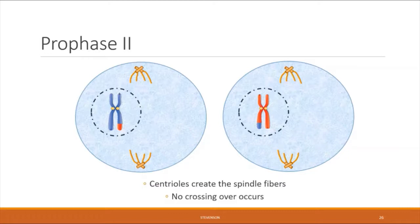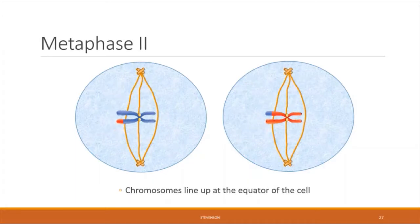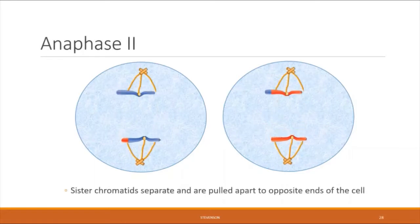Notably, no crossing over occurs in prophase two, because the homologous chromosomes have already been separated into two separate cells. During metaphase two, the chromosomes line up attached to the spindle fibers along the equator of the cell. In anaphase two, the chromosomes are pulled apart at their centromeres into separate sister chromatids, dragged to opposite ends of the cell. In this way, anaphase two is more similar to what we see in mitosis than anaphase one is.